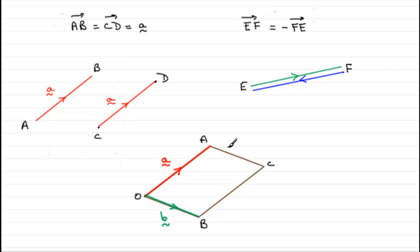Then, because this is a parallelogram, I could find vectors like BC. The vector BC, because it's the same length as OA and going in the same direction as OA, then I could say that that's the vector a.